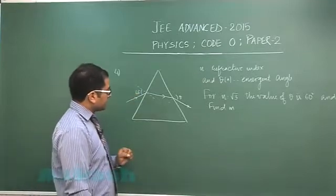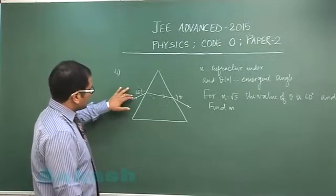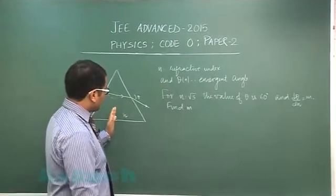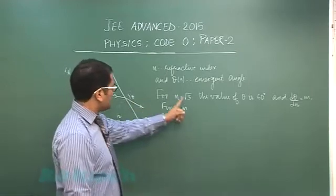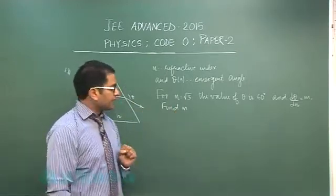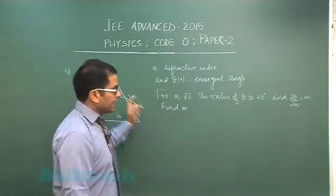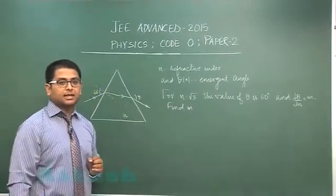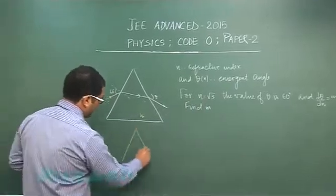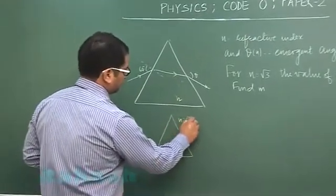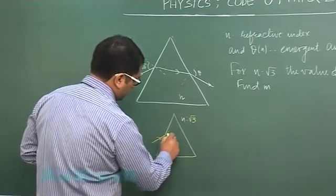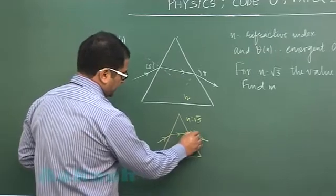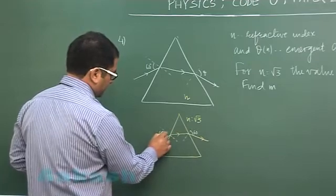Question number four is from ray optics, beautifully set from the topic of prisms. The angle of incidence is 60 degrees, the angle of emergence is θ, and the refractive index is n. As n varies, θ also changes. For n = √3, the emergent angle is 60 degrees, and at that situation dθ/dn = m. We need to calculate the value of m, that is dθ/dn. This is a very special case — when n = √3 and θ = 60 degrees, you can see that this satisfies the condition of minimum deviation, with both angles equal to 60 degrees.